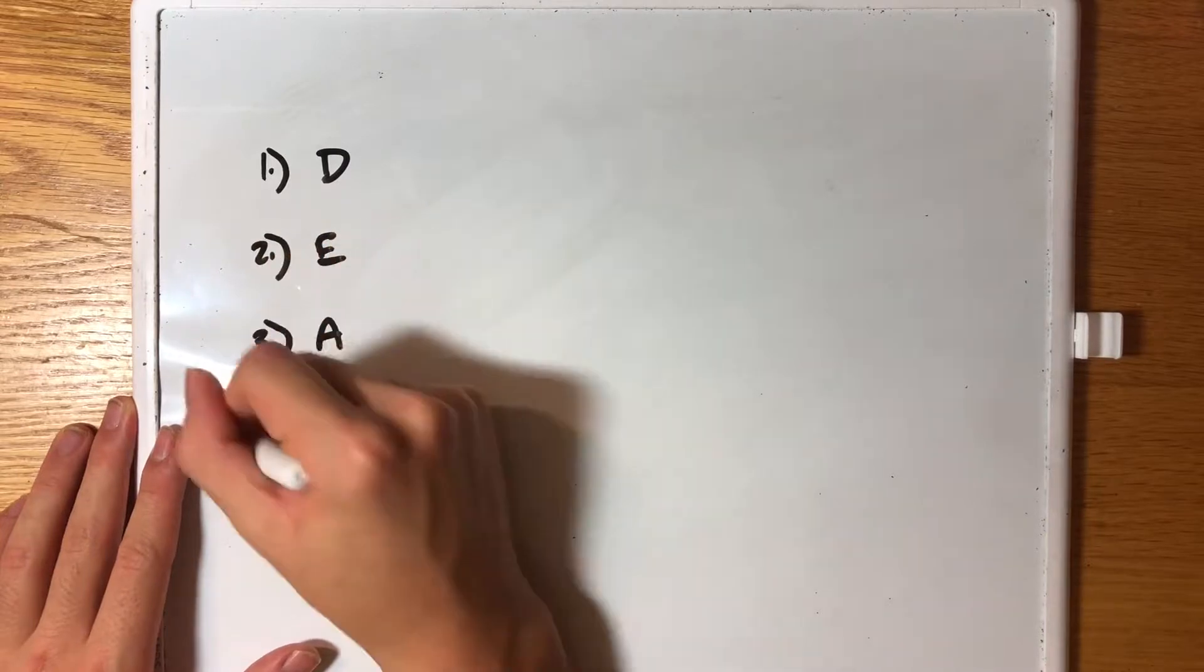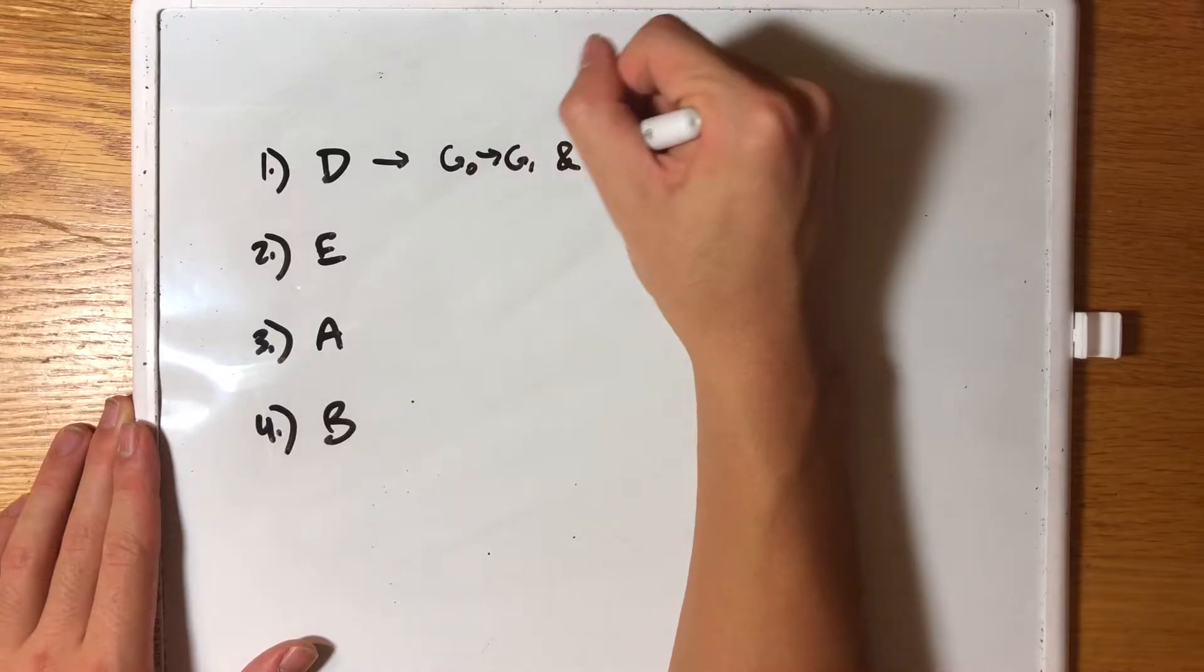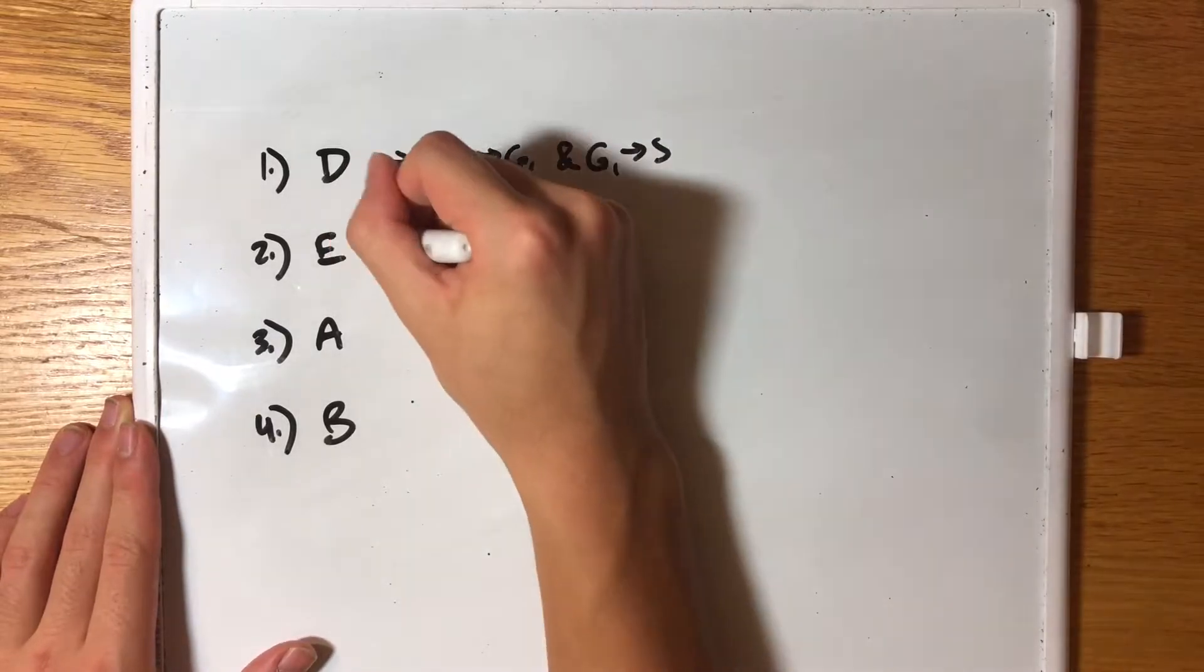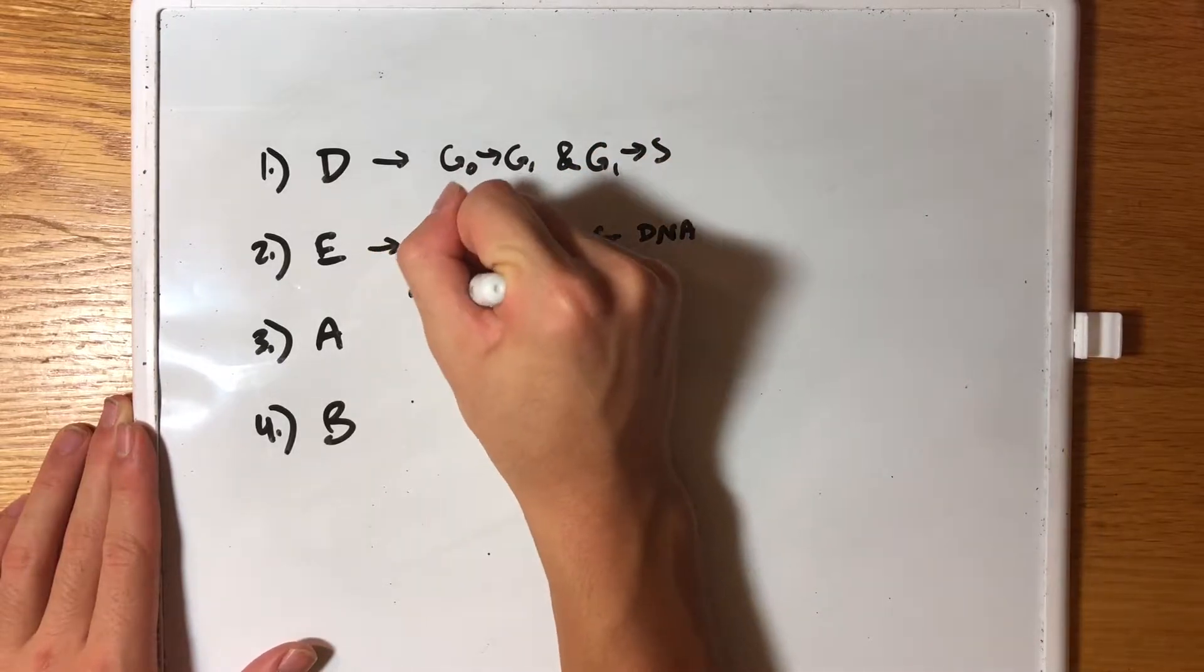D causes the cell to go from the G0 phase to the G1 phase and from the G1 phase to the S phase. E prepares the cell for DNA replication in the S phase.